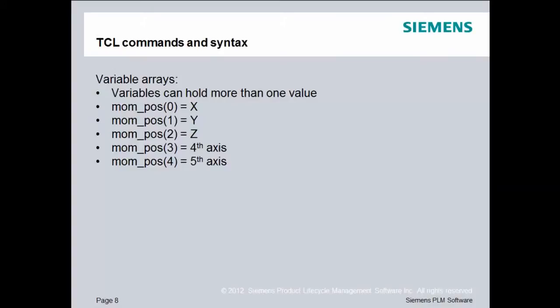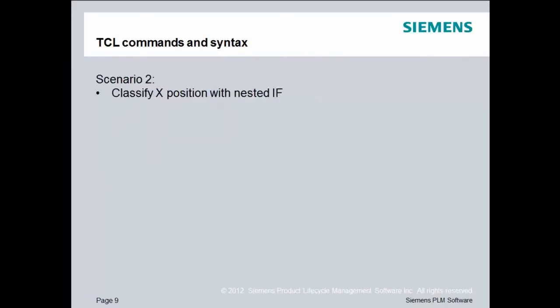Variables can be modified so that they hold multiple values. When they do that, they're called an array. For example, if I want to find the value of x, that is actually a variable called mom_pos(0). But if I wanted to find the value of y, that's mom_pos(1). And it logically follows that mom_pos(2) would be z. When we get into four and five-axis post-processors later on, we will look at mom_pos(3) and mom_pos(4).